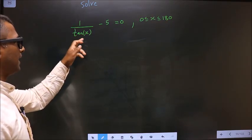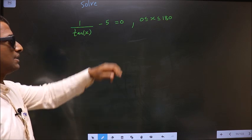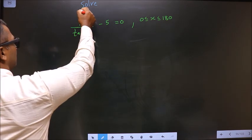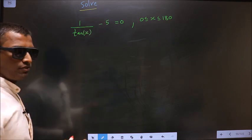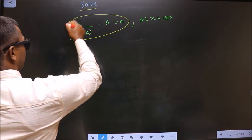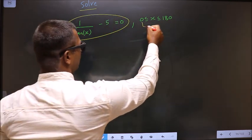Solve 1 by tan x minus 5 equal to 0, where x lies in the interval 0 to 180. Here they told you to solve, so you should find the values for x satisfying this equation, and it should lie in the interval 0 to 180.